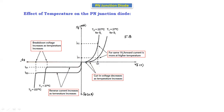Now looking at the reverse bias characteristics: this is the normal PN junction reverse bias characteristic at 27°C. If we increase the temperature from 27°C to 227°C, the breakdown voltage increases as temperature increases. At 27°C the breakdown voltage is at one level; at 227°C it increases further. We can clearly see this difference in the characteristics.